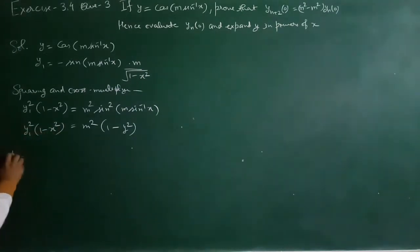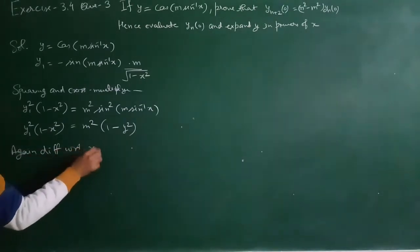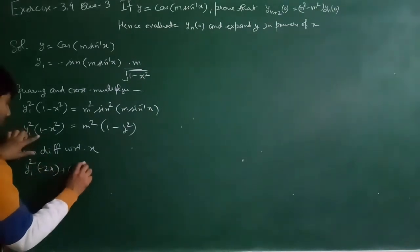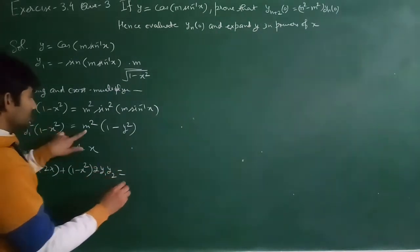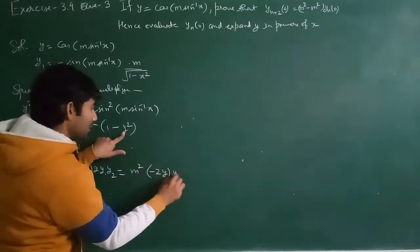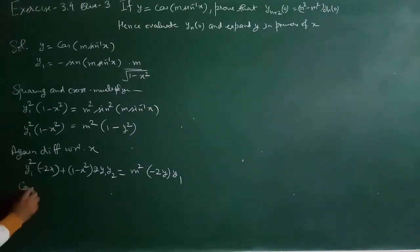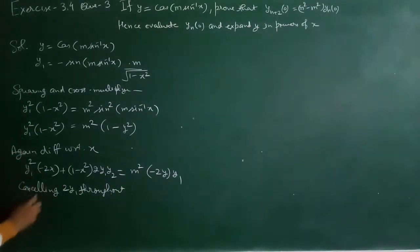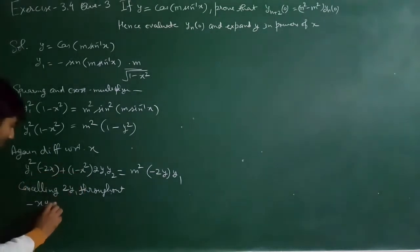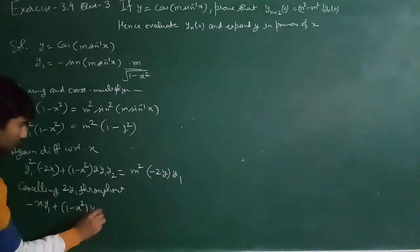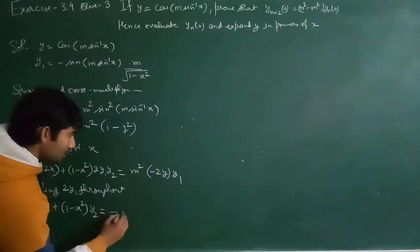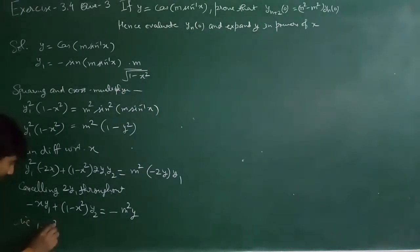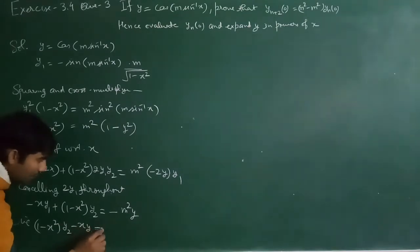Now differentiating again: y1²·(-2x) + (1-x²)·2y1·y2 = m²·(-2y·y1). Cancelling 2y1 throughout, we get: (1-x²)y2 - xy1 = -m²y, or equivalently, (1-x²)y2 - xy1 + m²y = 0.